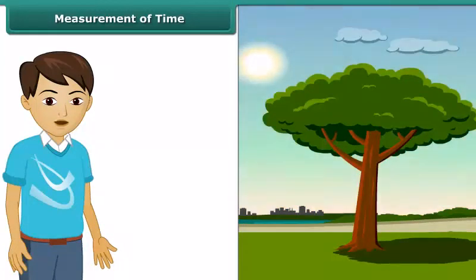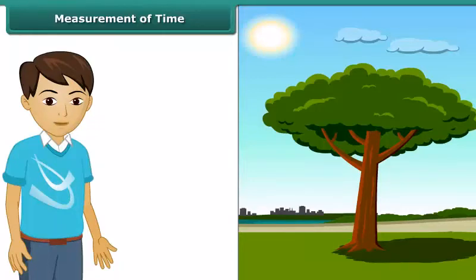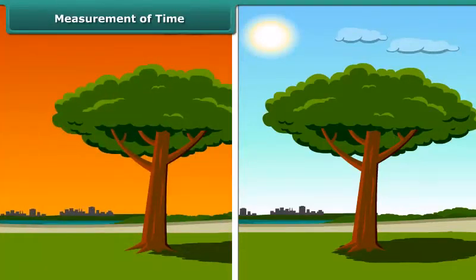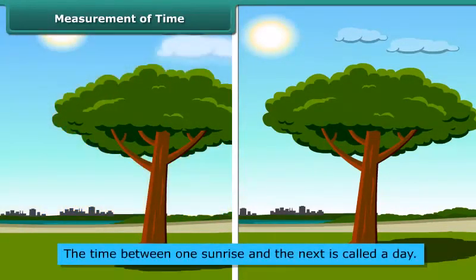Have you ever wondered how our elders could tell the approximate time of the day by just looking at the shadows? Many events in nature repeat themselves after definite intervals of time. For example, the sun rises every day in the morning. The time between one sunrise and the next is called a day.